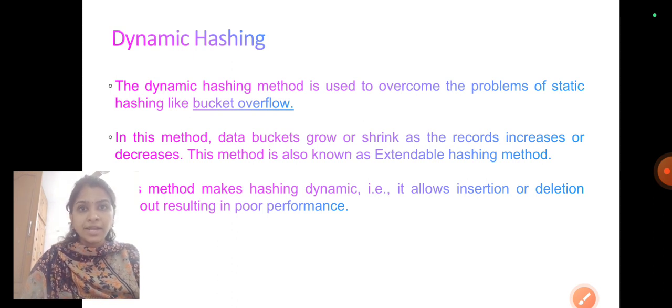So what is dynamic hashing? Dynamic hashing is a method used to overcome the problems of static hashing like bucket overflow. There are two types of hashing: static hashing and dynamic hashing. Static hashing has problems like bucket overflow. To overcome that we are going to dynamic hashing.